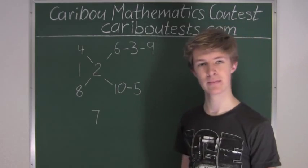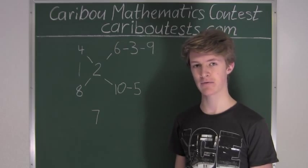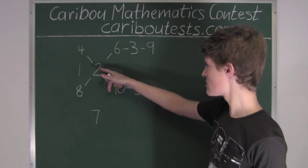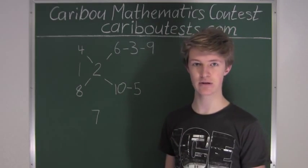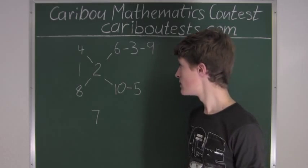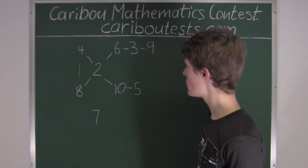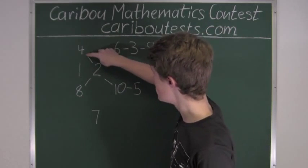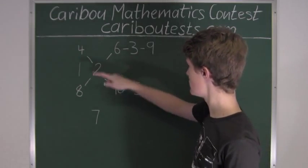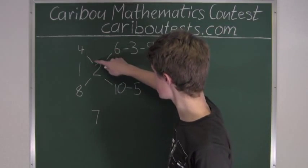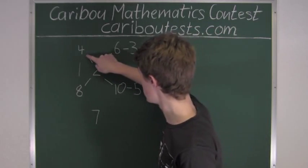Now we have all the numbers, and we want to find which sequence includes the most numbers. But we have a problem: looking at 2, we can see that it has 4 neighbors, and in the sequence it can only have 2 neighbors. So we must take away 2 of these 4 links. It doesn't matter if we take away this link or that link — these numbers will still have connectivity to the rest of the numbers. So let's just take away this link.